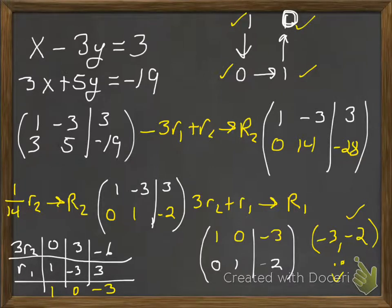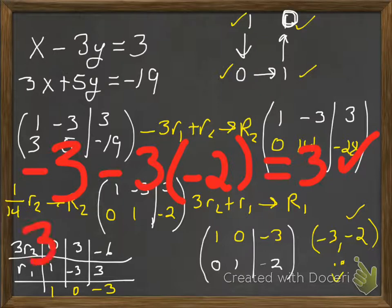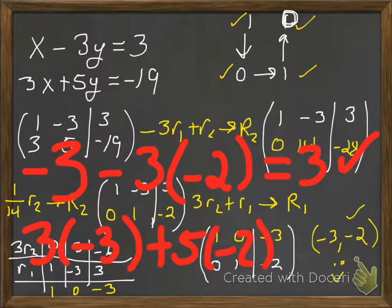Let's check: x is negative 3, so in the first equation, negative 3 minus 3 times negative 2 is negative 3 plus 6, which is 3. Good. The second equation: 3 times negative 3 plus 5 times negative 2 is negative 9 plus negative 10, which is negative 19. Works in both equations.